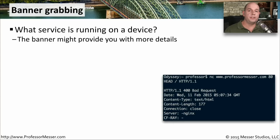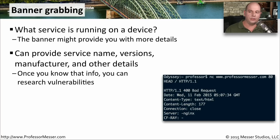Malicious users may go one step further and try to determine what services might be running on a particular machine. They can find a lot of information by grabbing the banner information being sent from those services. There's a lot of detail that might be contained within a banner — they can find out the service name, version numbers, manufacturer information, and many other details. With all of this information, you can do research to see if there are any known vulnerabilities against that particular application running that particular version.